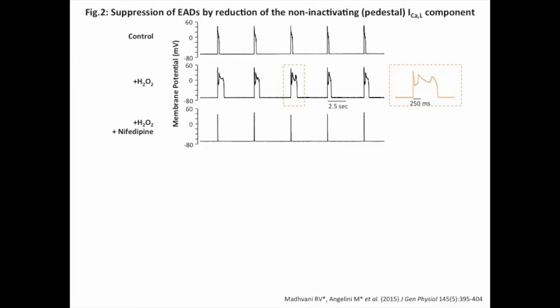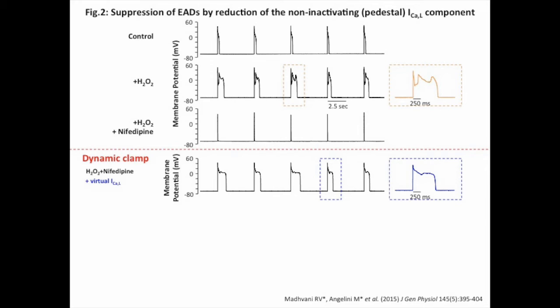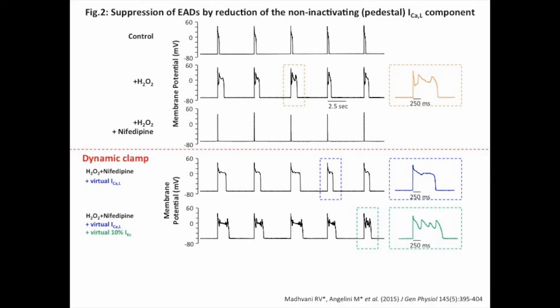At this stage, the dynamic clamp was engaged, injecting a virtual L-type calcium current modeled after calcium current recorded under hydrogen peroxide perfusion, effectively reconstituting the EAD regime. Note that EADs reconstituted by the virtual L-type calcium current appear smaller in amplitude than those observed without dynamic clamp. This can be attributed to the absence of IKS, which is normally activated by the rise in intracellular calcium. Including 10% of calculated IKS in the injected current markedly enhanced EAD amplitude, compensating for this effect, as shown in the green inset.